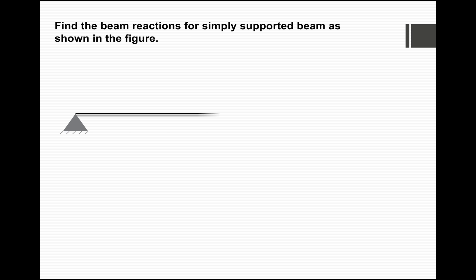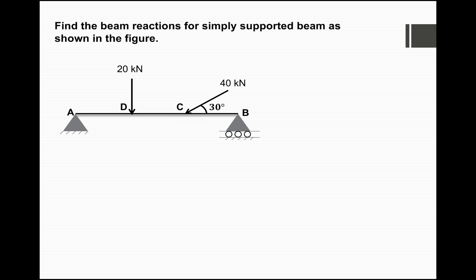The arrangement for this simply supported beam is as shown. At one end it has a hinge support and at the other end a roller support. At point D it carries a point load of 20 kN, whereas at point C it carries a load of 40 kN acting at an angle of 30 degrees. The distance AD is 2 m, DC is 2 m, and distance CB is 2 m.